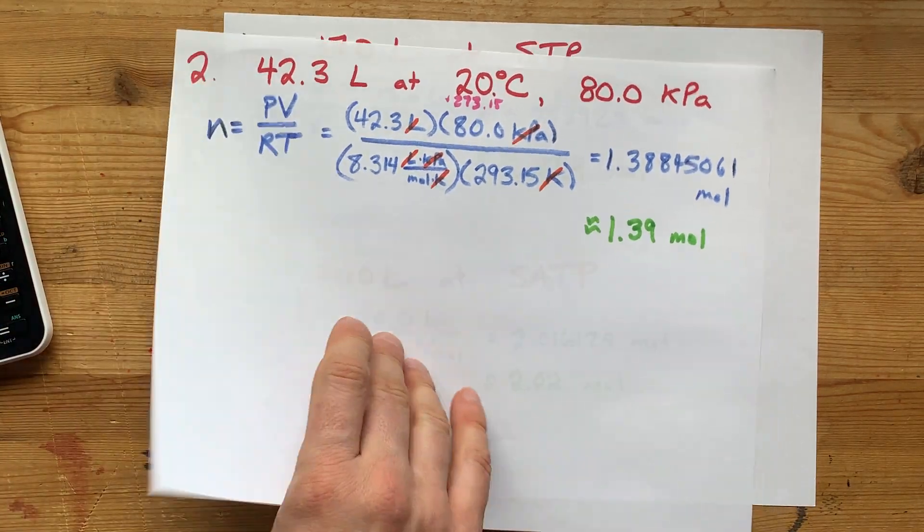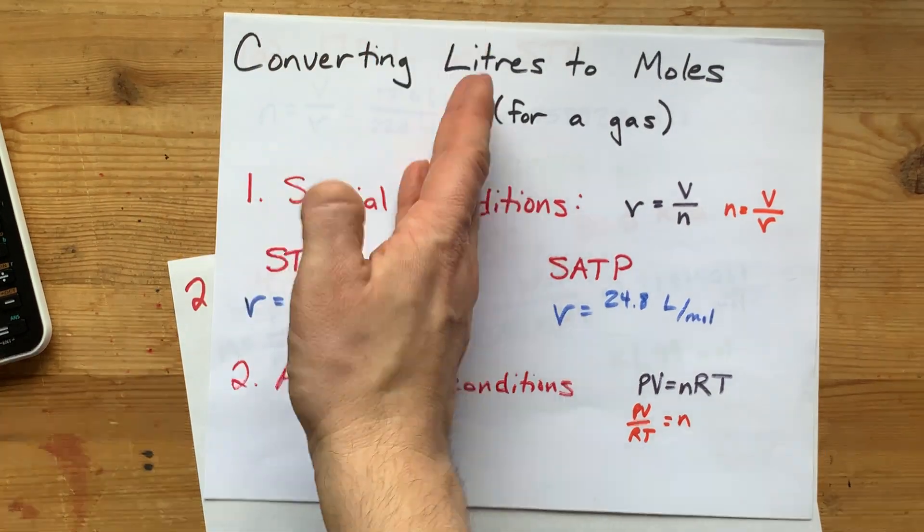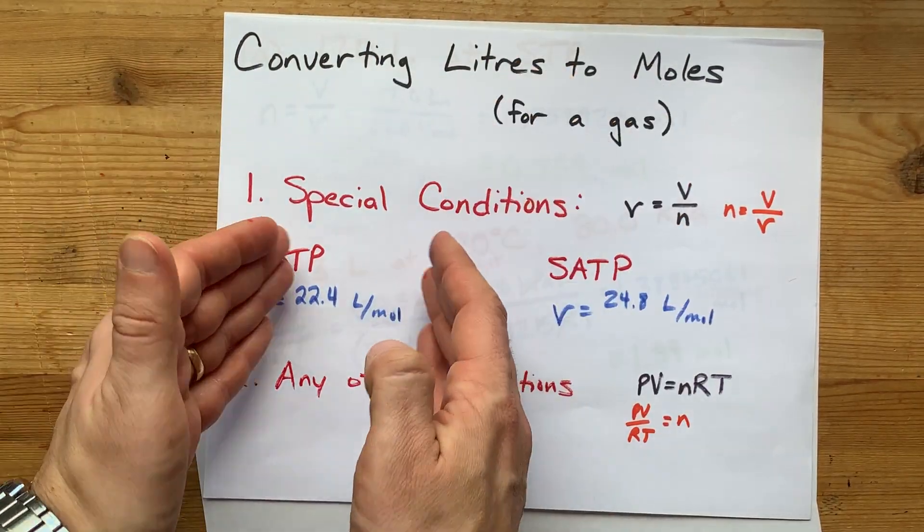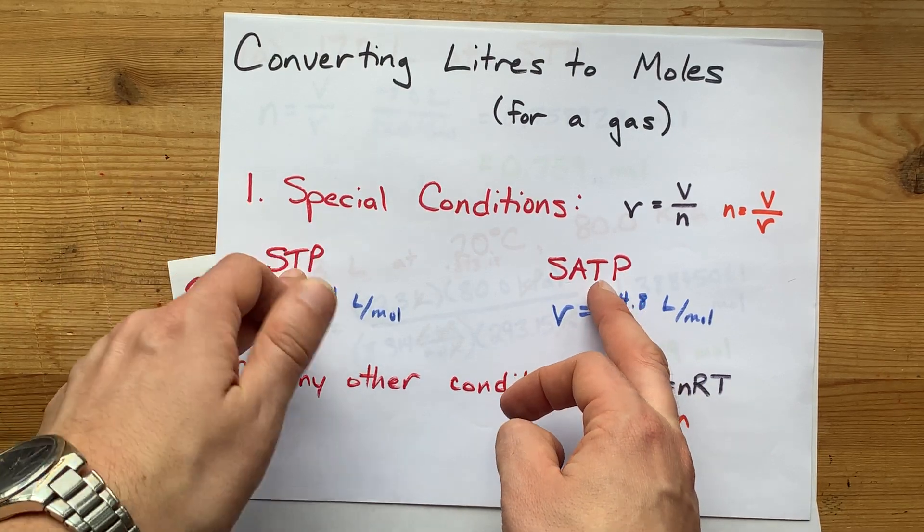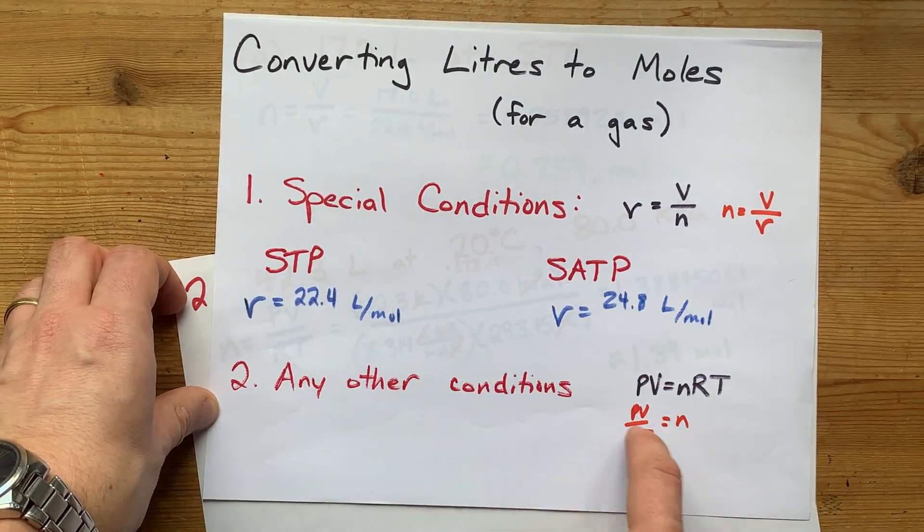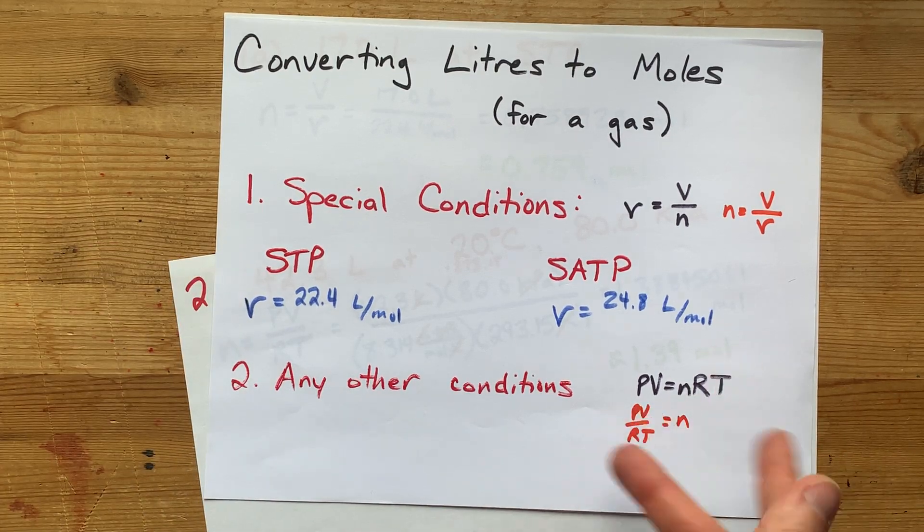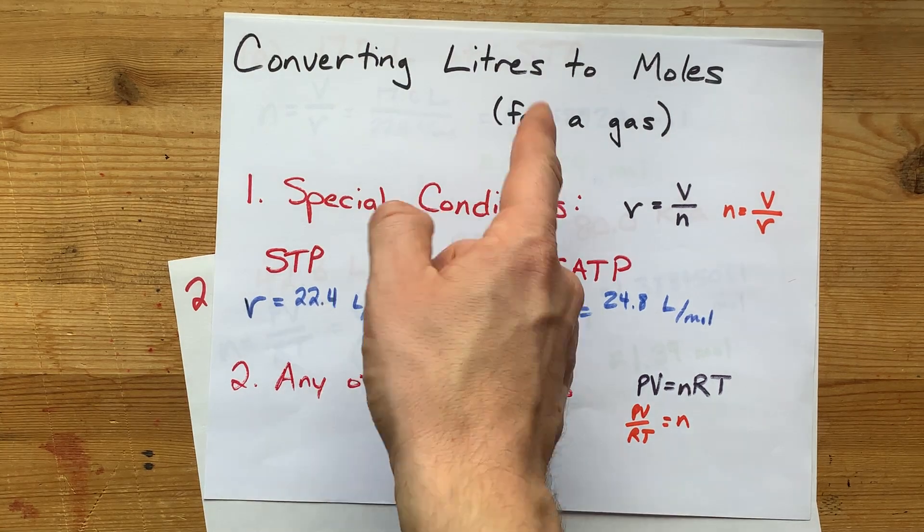To convert liters to moles, use the molar volume formula if you have special conditions like STP or SATP, or use the ideal gas law rearranged as n = PV/RT for any other conditions. Thanks for being with me. Best of luck.